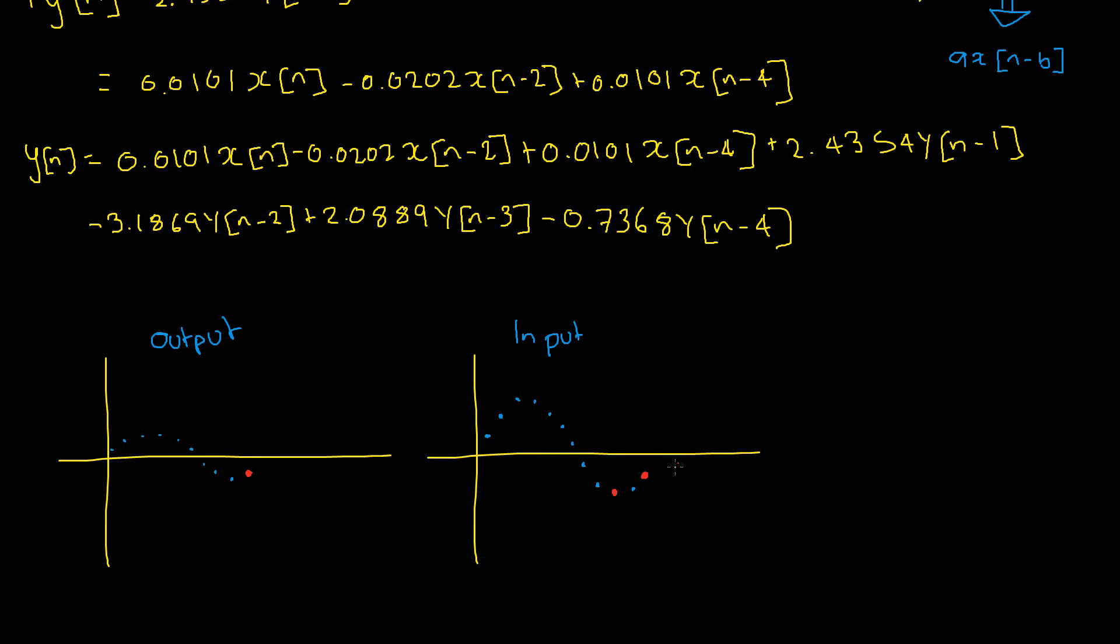Likewise, our N minus 4 would be our input from 4 samples ago so it would be this one here and we simply scale and subtract and add these samples to each other as well as our previous outputs to get our filter. So, our Y of N take 1 is referring to our output 1 sample ago likewise, our Y of N take 4 is referring to our output from 4 samples ago.